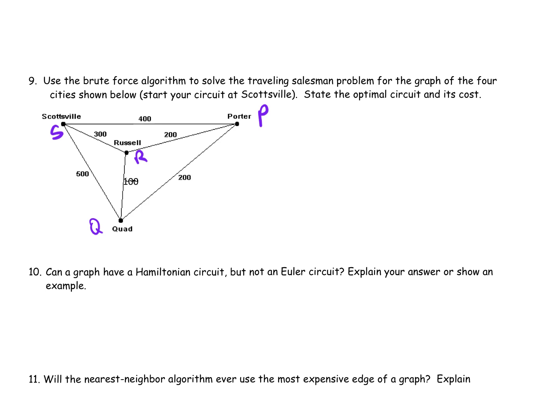I'm starting at Scottsville — that's my starting point. I'm starting at Scottsville, and we're starting our circuit at Scottsville. I have to list all the possible ones and figure out the cheapest route. We've got a complete graph with four vertices. I know that because there are three edges at every vertex, so I know this is a complete graph.